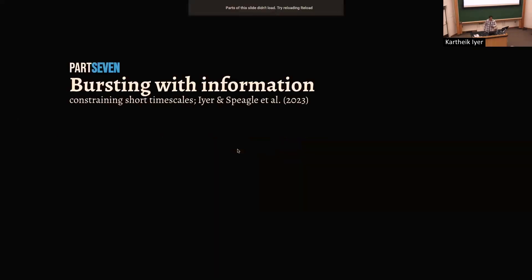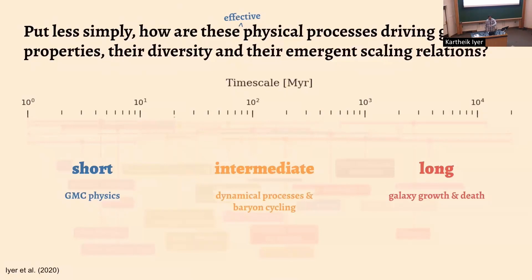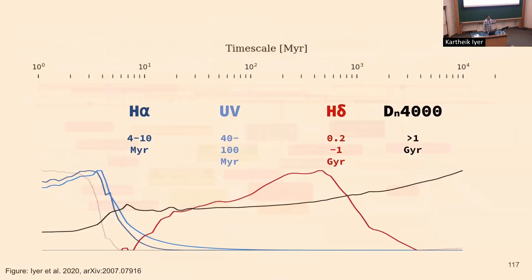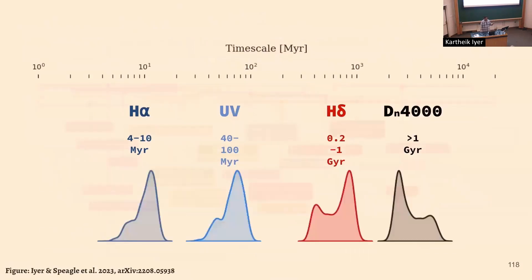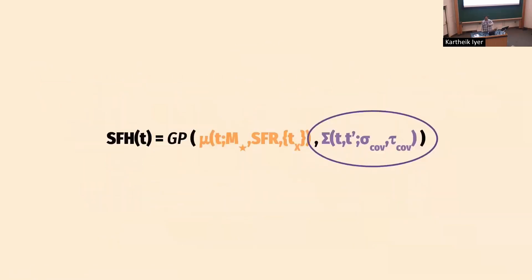That brings us to how we can actually constrain fluctuations on a given timescale from observations — a much harder problem than the overall shape. Again, three different timescales, and spectral indicators that allow us to break degeneracies between those timescales to get at the star formation history. When we look at ensembles of galaxies rather than a single galaxy, we can use distributions of different spectral indicators and their covariances to understand fluctuations at different timescales. The way this works is going back to the Gaussian process covariance function, which we fixed when doing the mean, but now we can unfreeze it and see if we can use populations of galaxies to get physical information about this covariance function.